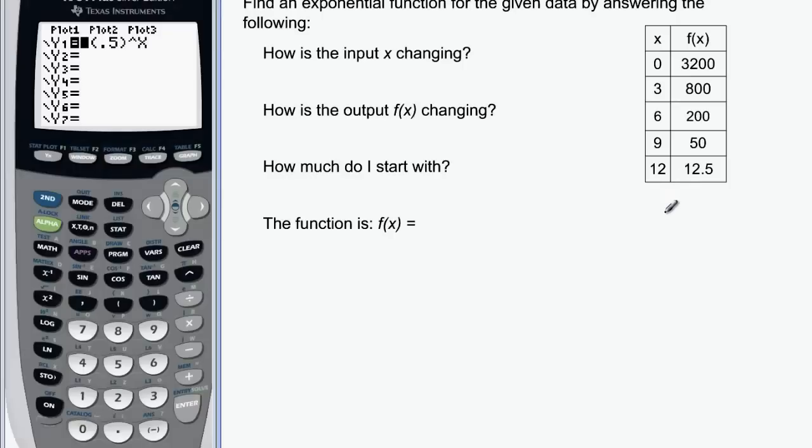Our last example here then we're gonna look at what happens when x doesn't change by one. If you look at this we're adding three each time to get from one x to the next. So x is increasing by three. And the y's are decreasing. We are going from 3200 to 800. Looks like we divided by four. And 800 divided by four would be 200. And 200 divided by four would be 50.